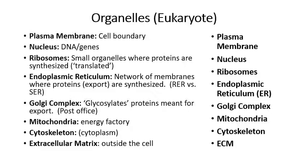Let's look at the different organelles found inside a cell. The plasma membrane constitutes the boundary of the cell — it's the outer layer. We have the nucleus, which has its own membrane and contains the DNA and the genes. We have some very small organelles called ribosomes — typically only about 5 nanometers in size. If Columbia College was a cell, 5 nanometers would be about the size of a soccer ball — that's the relative size of a ribosome compared to a cell.